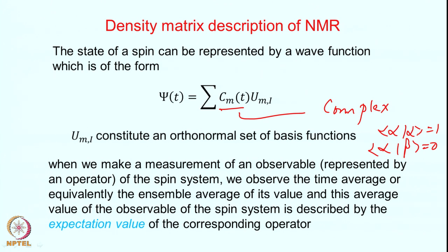This is the generalized description of the spin system — we represent it as a wave function as a superposition of various eigenstates. Now, when you actually make a measurement of an observable, which is represented by an operator, for example measuring the x-magnetization or y-magnetization, we observe the time average of an ensemble.